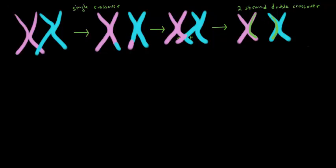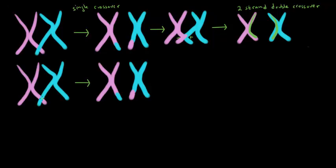Let's look at another scenario. We're going to cross over our chromosomes — that's the first incident of crossing over, labeled one. And then we have a second incident of crossing over.